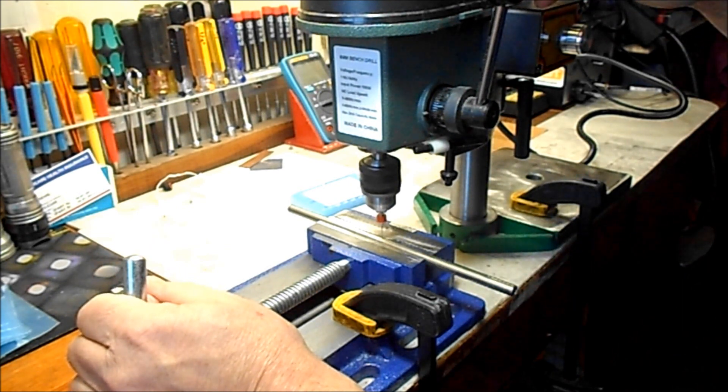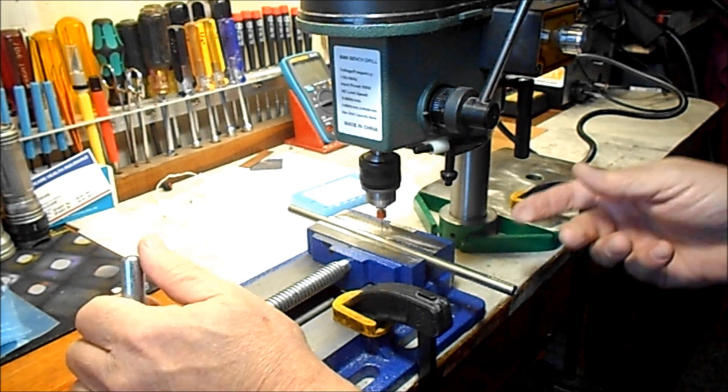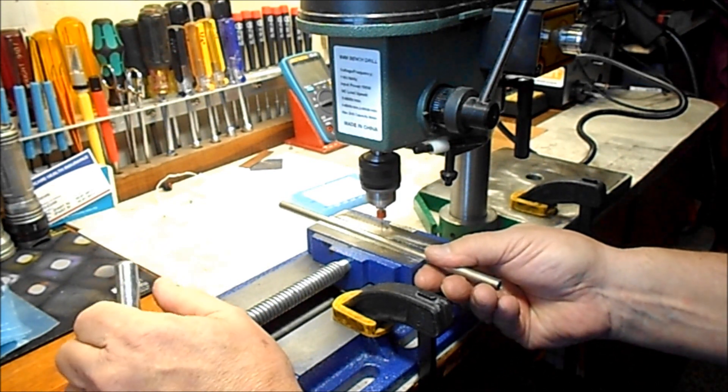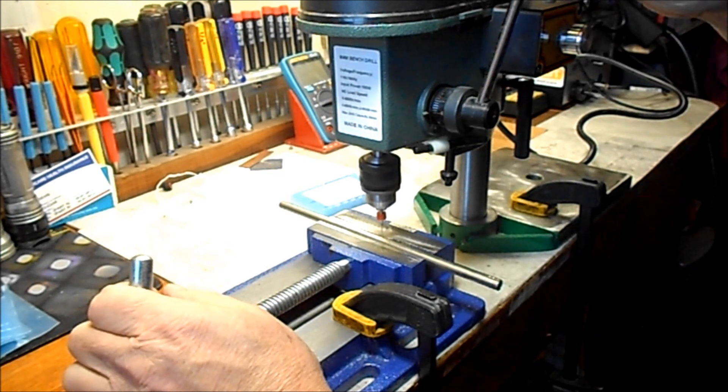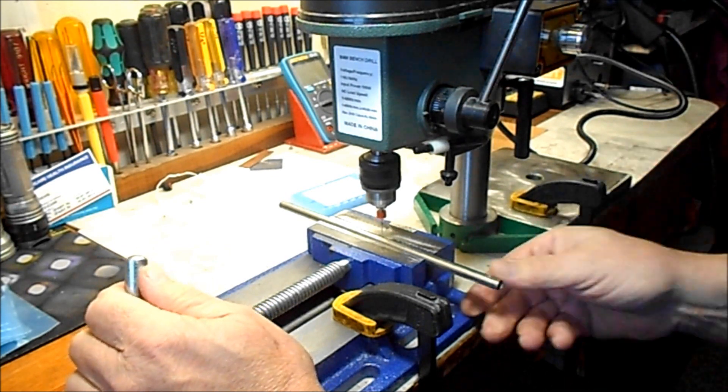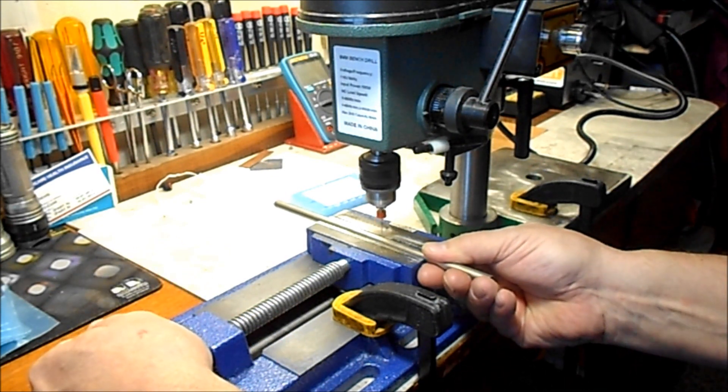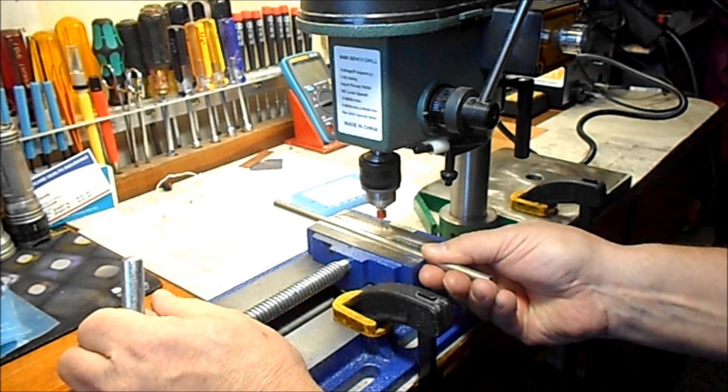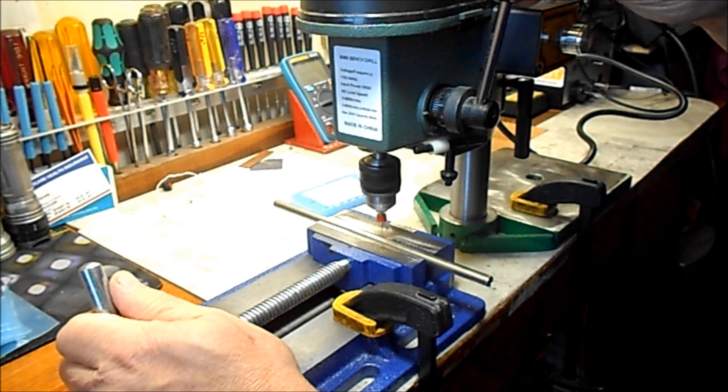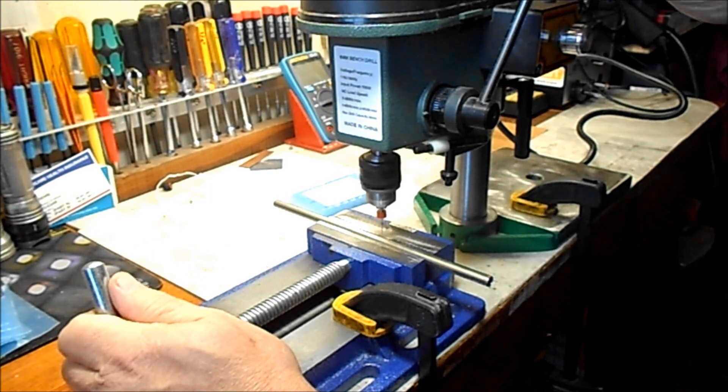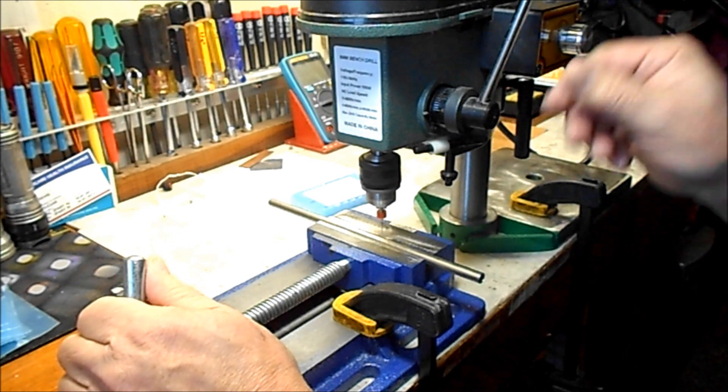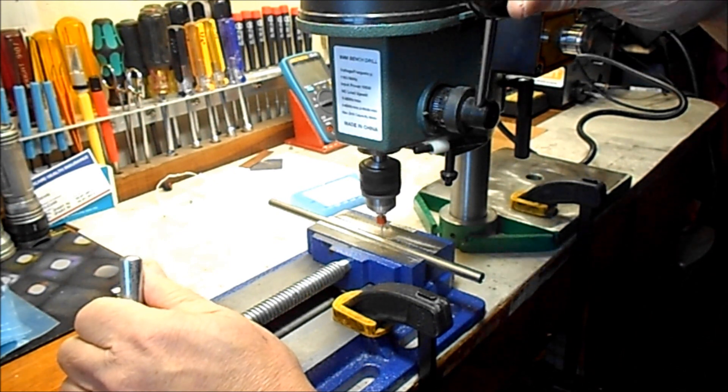You gotta make sure everything's clamped down really well because if anything moves at all while you're drilling with this little fine tungsten carbide drill, it's only about twice the diameter of a human hair. That'll make good bubbles. I'm trying to keep it all in line so the bubbles come out in a straight stream.